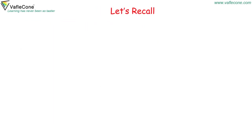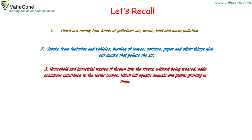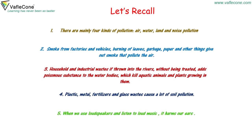Let's recall. There are mainly four kinds of pollution: air, water, land, and noise pollution. Smoke from factories and vehicles, and burning of leaves, garbage, paper, and other things pollute the air. Household and industrial waste thrown into rivers without treatment adds poisonous substances to water bodies, killing aquatic animals and plants. Plastic, metal, fertilizers, and glass waste cause a lot of soil pollution. When we use loudspeakers and listen to loud music, it harms our ears.